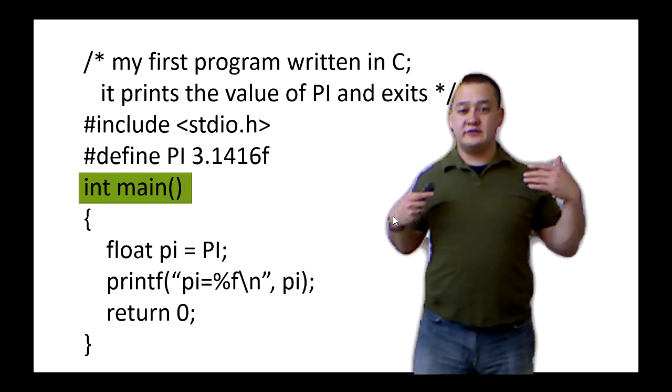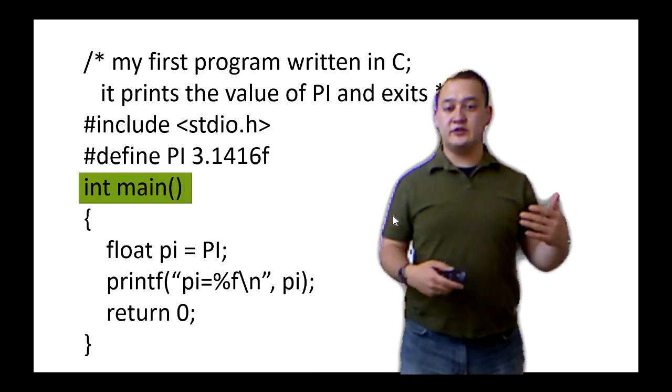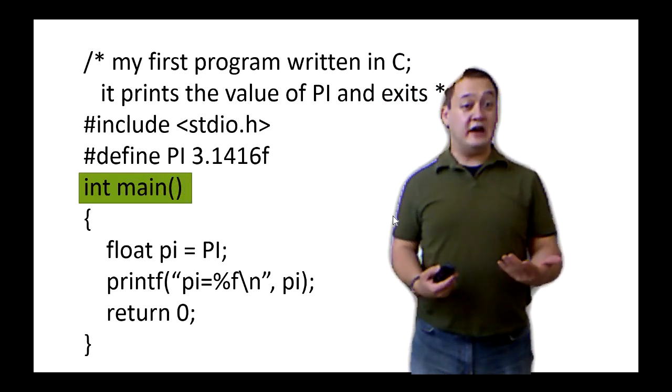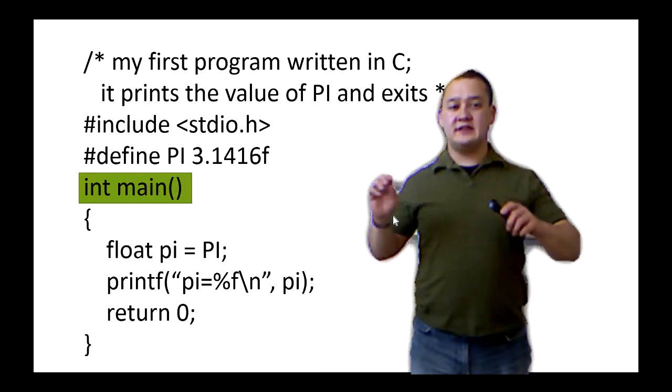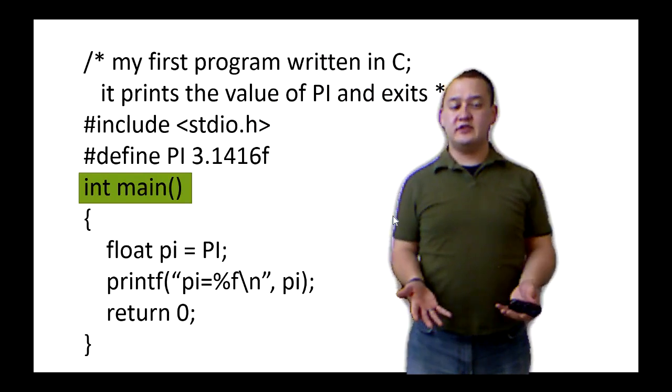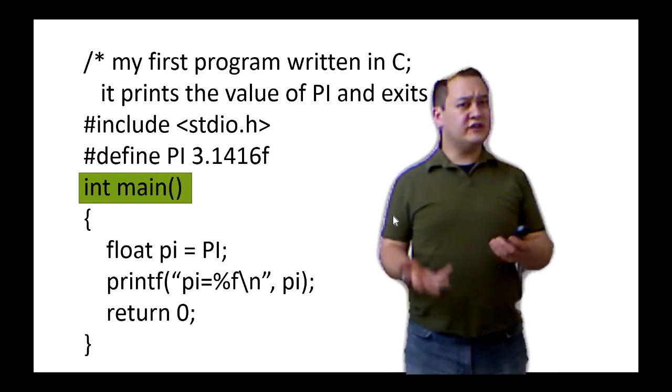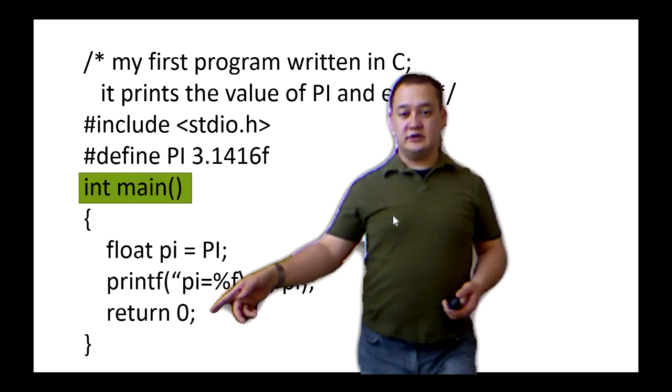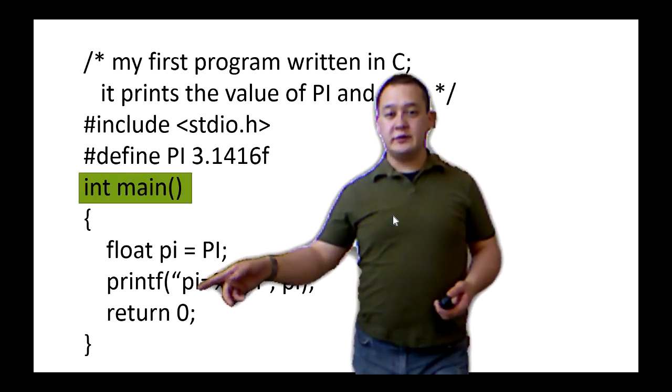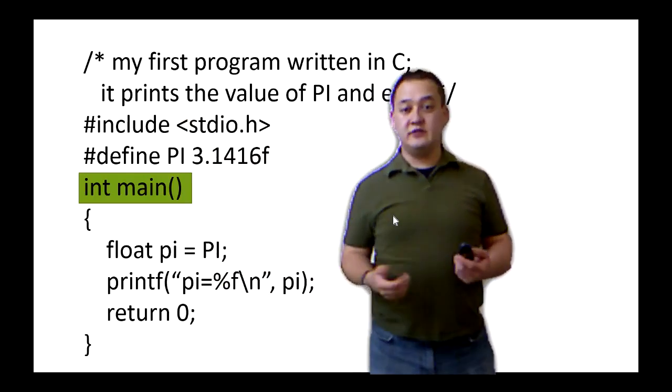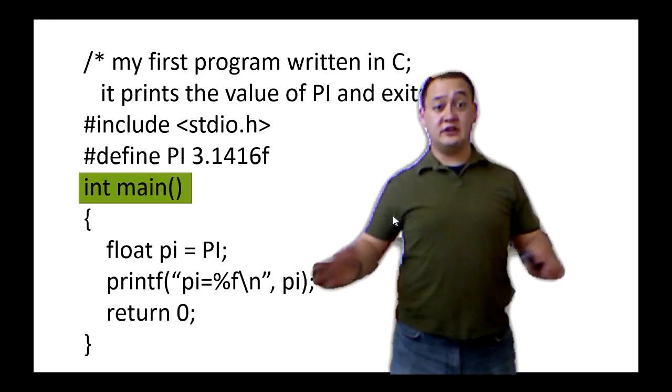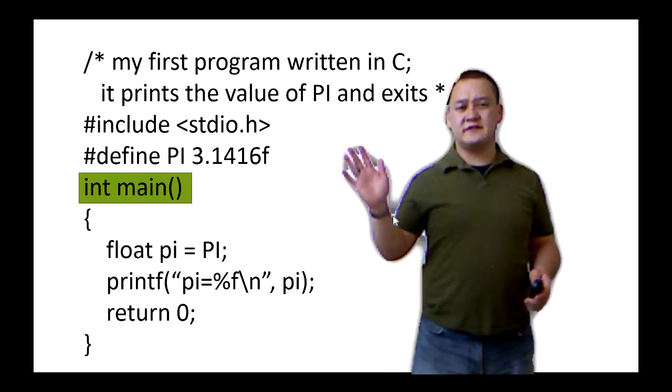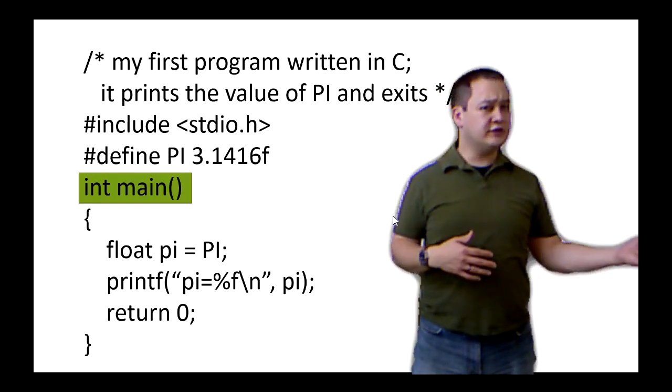And that means when the function is done writing, it's going to send an integer back out. And since main is the main function that's going to tell the computer when is this program done running, when we get down to this return zero, this zero will be sent to the CPU to say, hey, this program's done. You don't need to keep running me anymore. So that's just a flag value to say, am I still running or not?